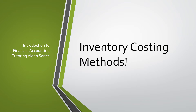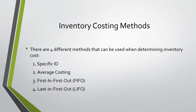Today, we will be going over the different inventory costing methods. There are four different methods that can be used when determining inventory costs. The first one is specific ID or specific identification, the second one is average costing, the third one is first in first out, more commonly called FIFO, and the fourth one is last in first out, also most commonly referred to as LIFO.